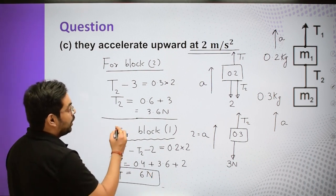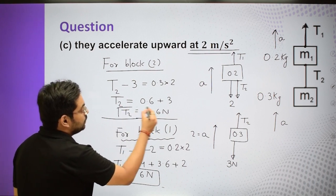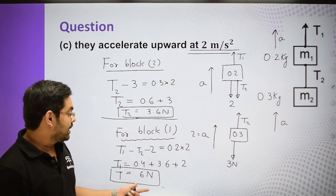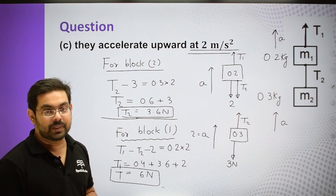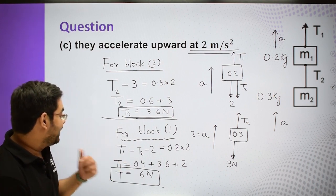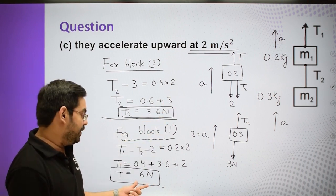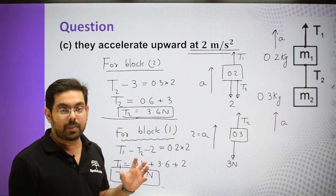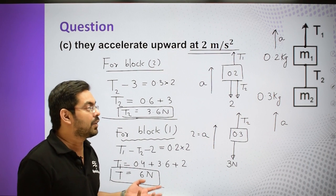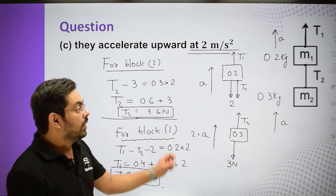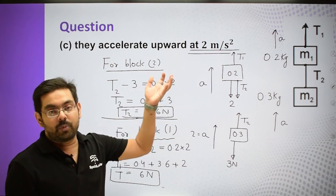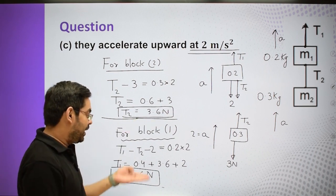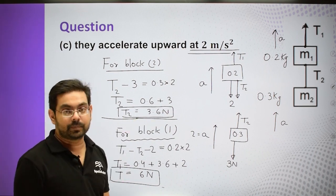Now we have the values of T1 and T2 in this case. Compared to the previous equilibrium case where T1 was 5 Newton and T2 was 3 Newton — here T1 is 6 Newton and T2 is 3.6 Newton. The forces in the upward direction increased because the blocks need to accelerate upward — extra force is needed in the upward direction for that acceleration.